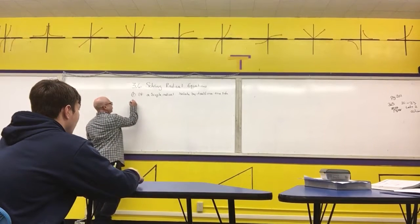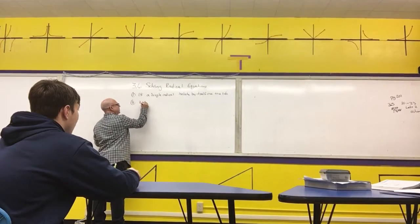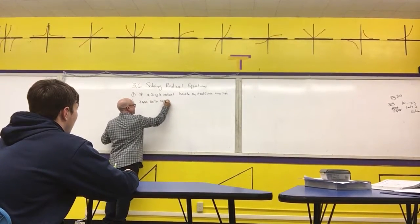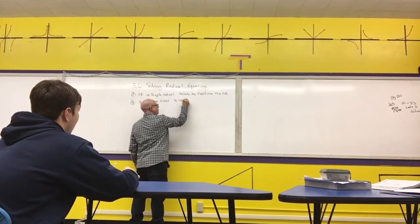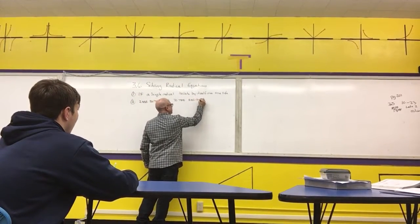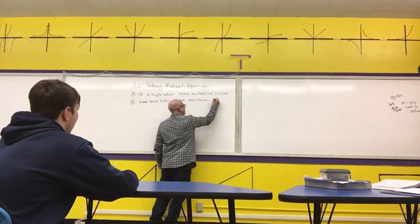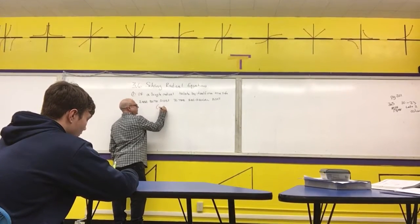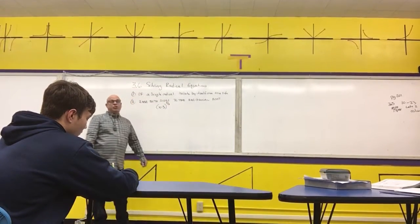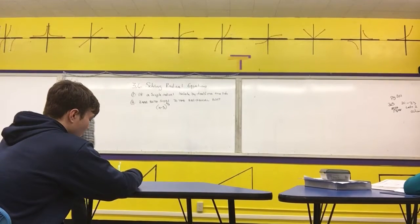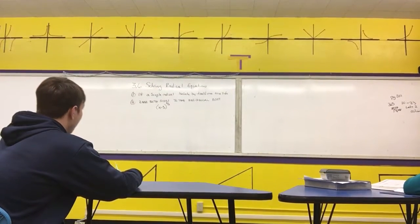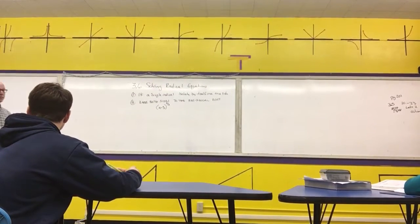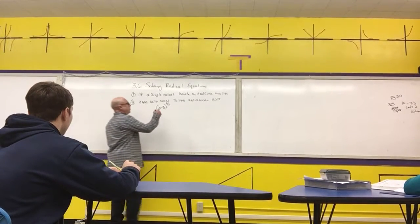Then what you want to do is you want to raise both sides to the reciprocal root. For example, if I have x minus 3 to the two-thirds power, that's a radical equation. What power should I raise both sides to? What's the reciprocal of two-thirds?